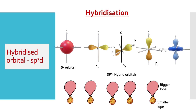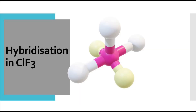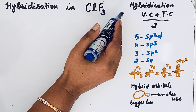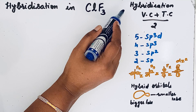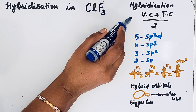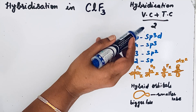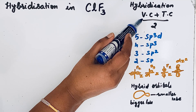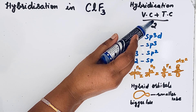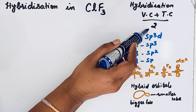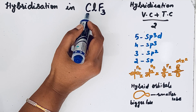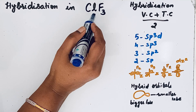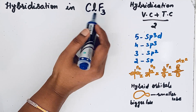We are here to discuss hybridization in CLF3, the interhalogen compound chlorine trifluoride. To find the hybridization, let us use a simple formula: (VC + TC) / 2, where VC is the valence electrons of the central atom and TC is the total atoms attached to the central atom, divided by 2.